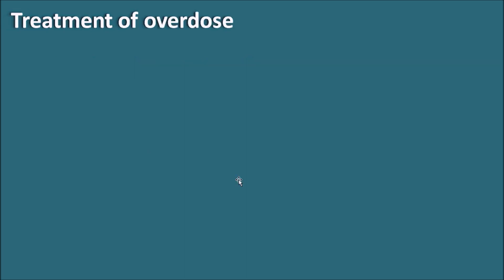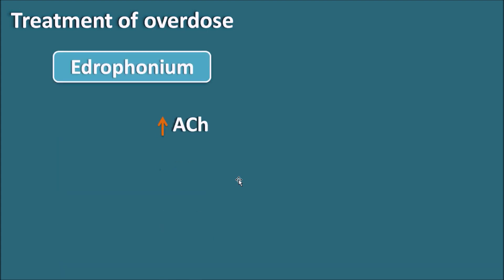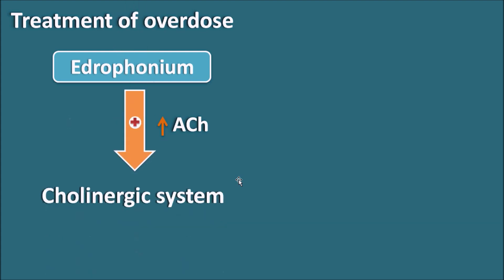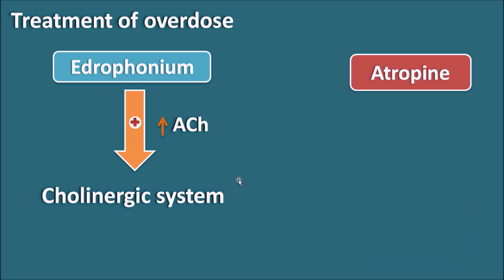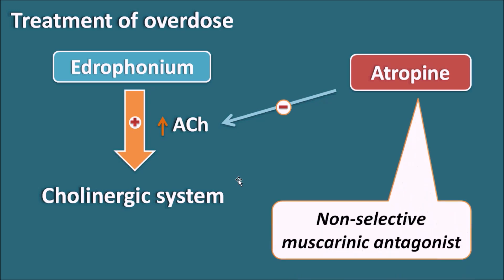Regarding treatment of overdose: if Edrophonium is accidentally given at an overdose, an antidote is needed to reverse its effects. Edrophonium increases acetylcholine levels at the synaptic cleft and increases cholinergic transmission. A drug which blocks this cholinergic transmission should be used as an antidote. Atropine is a non-selective muscarinic antagonist which can be used as an antidote in case of overdose of Edrophonium.